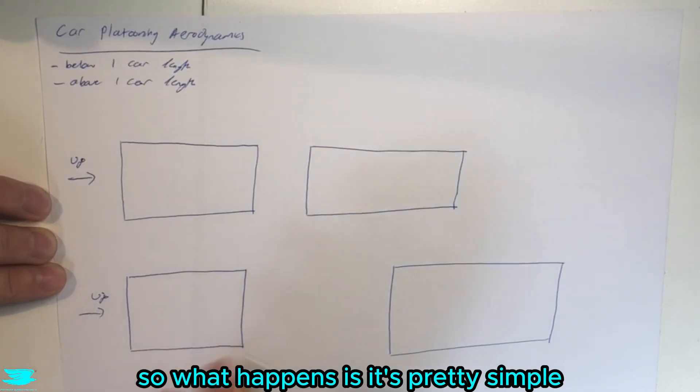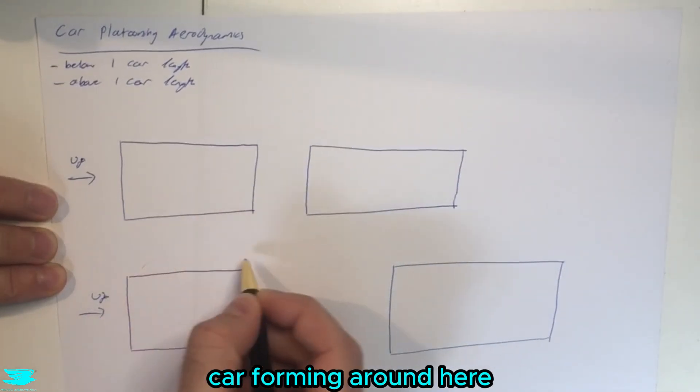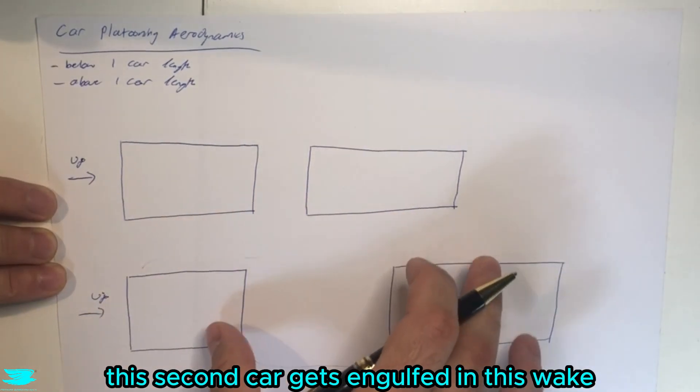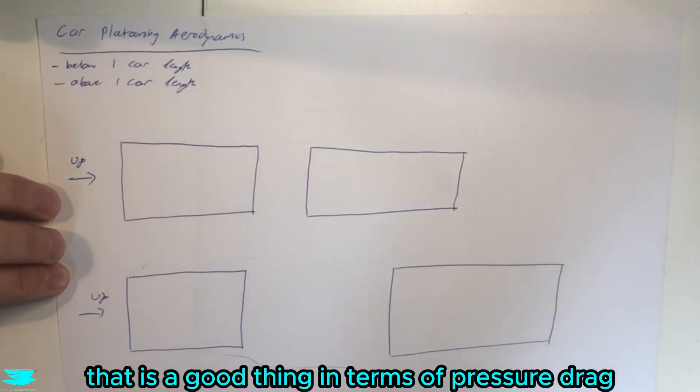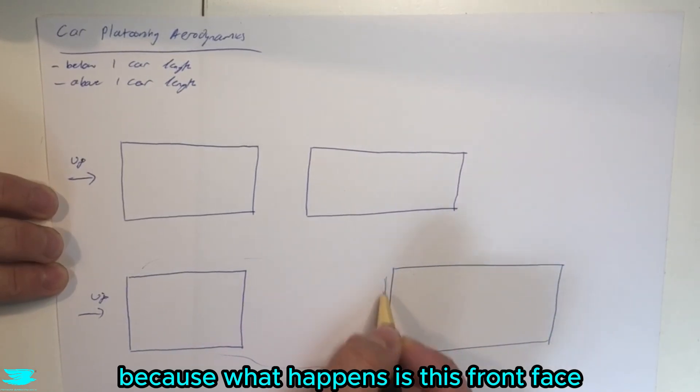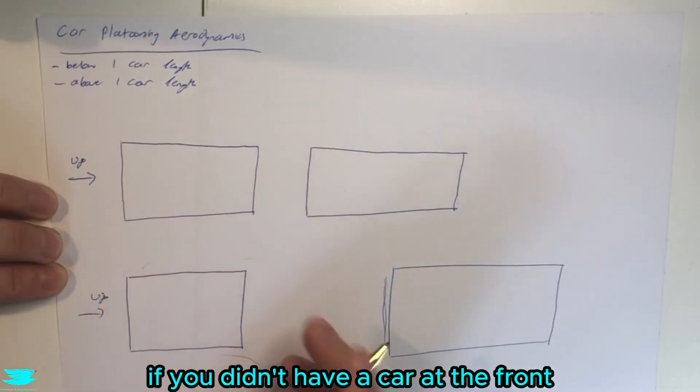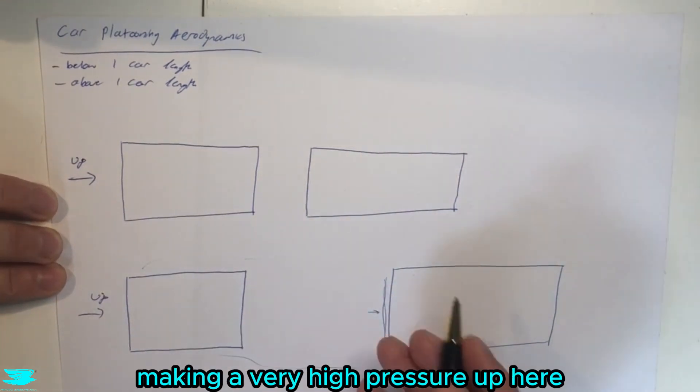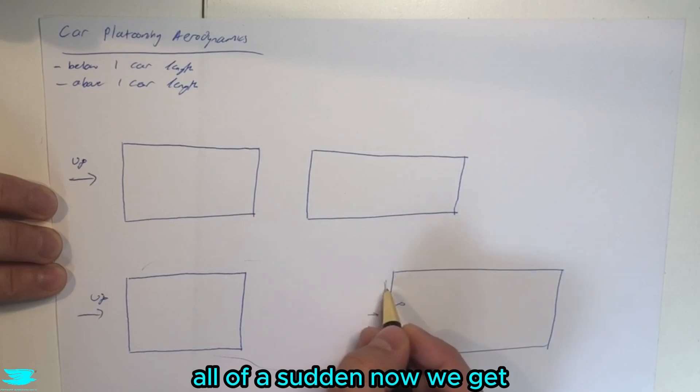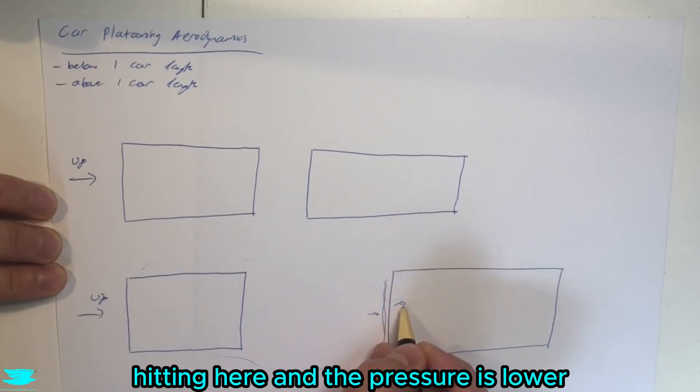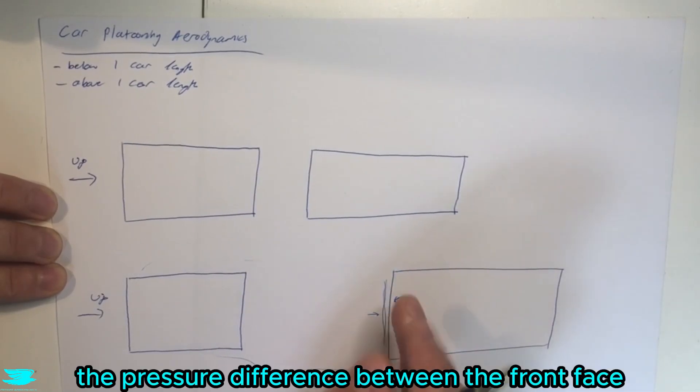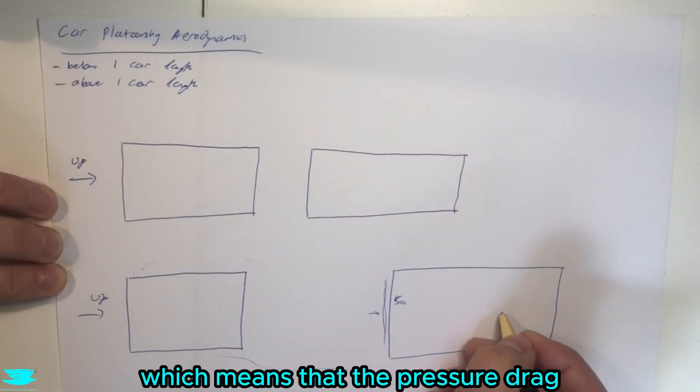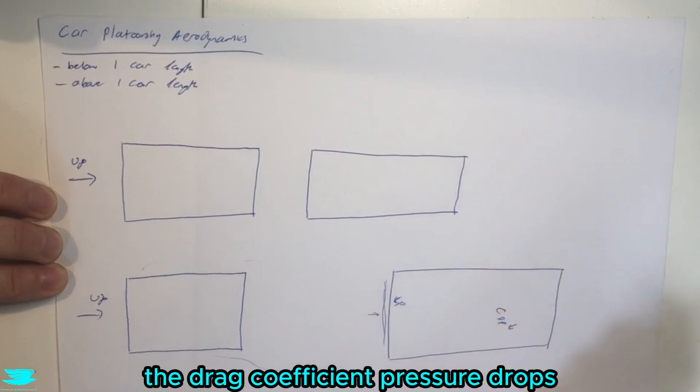So what happens is it's pretty simple. We have the wake from one car forming around here, and fortunately, this second car gets engulfed in this wake. That is a good thing in terms of pressure drag, because what happens is this front face, which would usually, if you didn't have a car at the front, would be seeing all this very high energy flow hitting the front, decelerating, making a very high pressure up here. All of a sudden, now we get a low velocity flow hitting here, and the pressure is lower. That means that the pressure difference between the front face and the rear face is much lower, which means that the pressure drag, the drag coefficient for the pressure, drops. That's really nice.